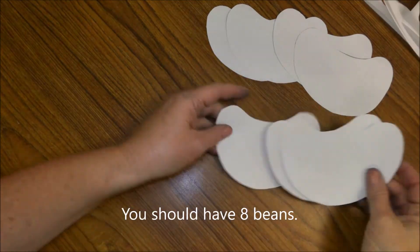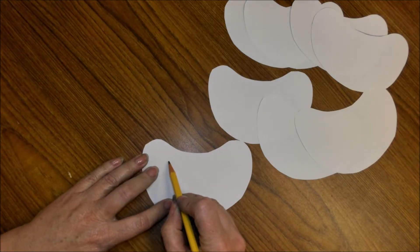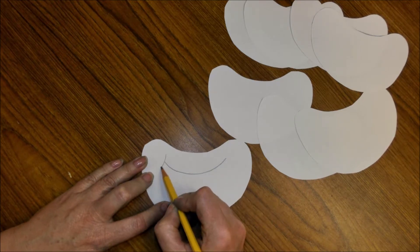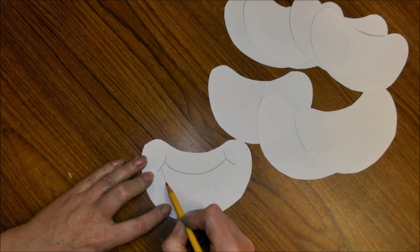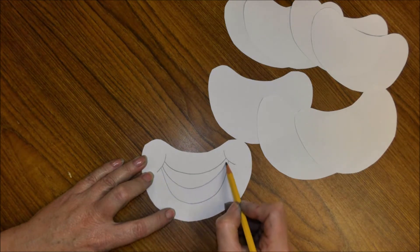That out, so you should end up with eight bean shapes. Now using your pencil, we're going to make a happy emoji. Start with a short smile, make your cheeks, and then make a bigger smile underneath. Draw a line in between. It kind of looks like a banana, and then draw your teeth marks.